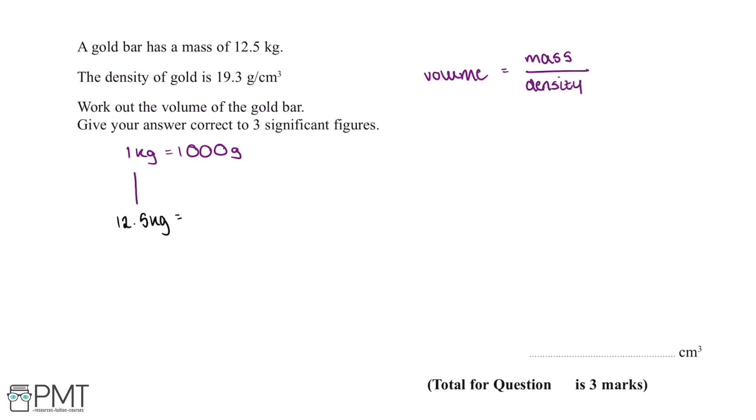To get from 1 kilogram to 12.5 kilograms, we need to multiply by 12.5. We can do the same to the right hand side of this equation. 1,000 times 12.5 gives us 12,500 grams.